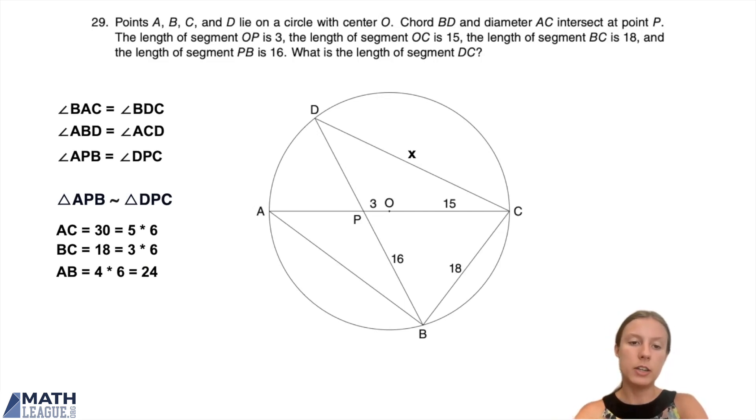Awesome. Now we know side AB, we just need to know the ratio of these two triangles. Sides PB and PC are corresponding sides in the two triangles, and we know their lengths. At least we know PB is 16. And we can find PC pretty easily. That's just 3 plus 15, which is 18.